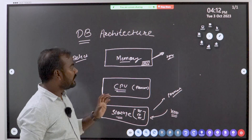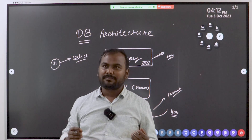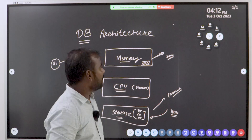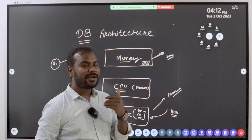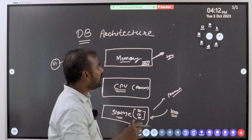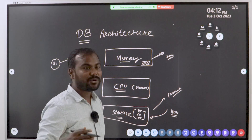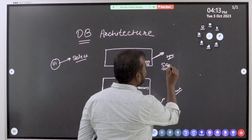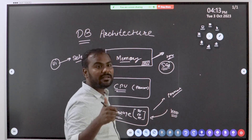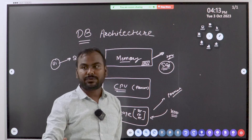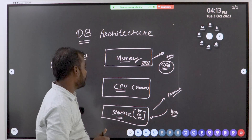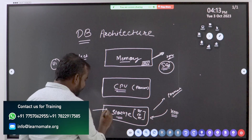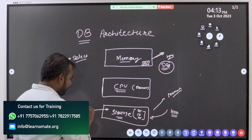We now know the three important components of Oracle database architecture: memory, CPU, and storage. When you allocate, say, 100 GB of memory to your database, the terminology in the database world for that is called SGA — the memory allocated to your Oracle database. Along with the number of CPUs and storage, this is where your database will actually reside.